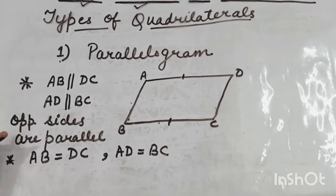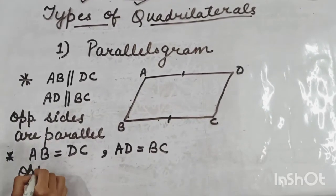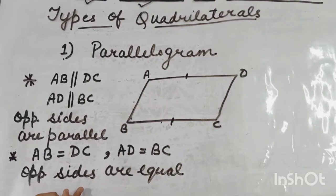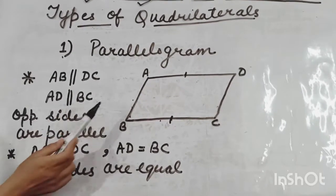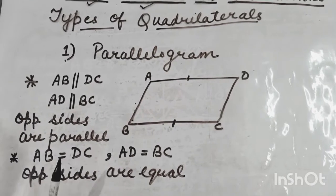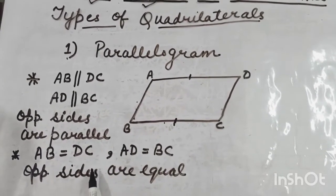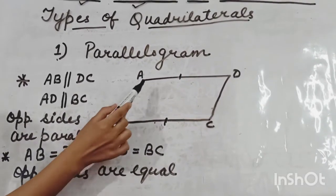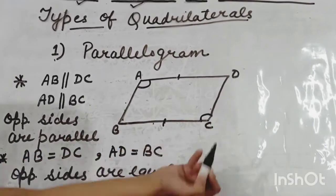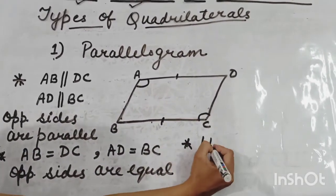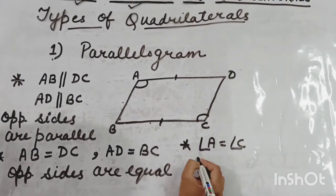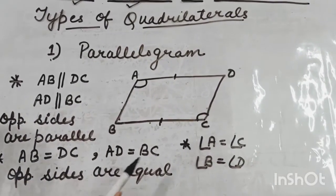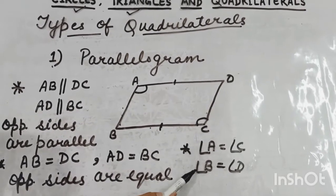So the conditions of a parallelogram: first, opposite sides are parallel; second, opposite sides are equal. Also, opposite angles are equal — angle A is equal to angle C, and angle B is equal to angle D. So: opposite sides are parallel, opposite sides are equal, and opposite angles are equal.